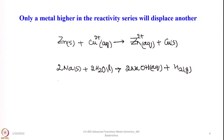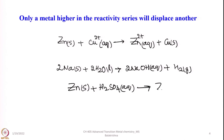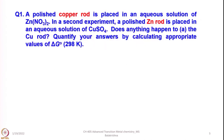Less active metals such as iron or zinc liberate hydrogen when reacted with acids. For example, if you take zinc and treat it with sulfuric acid, it forms zinc sulfate and H₂ is liberated.